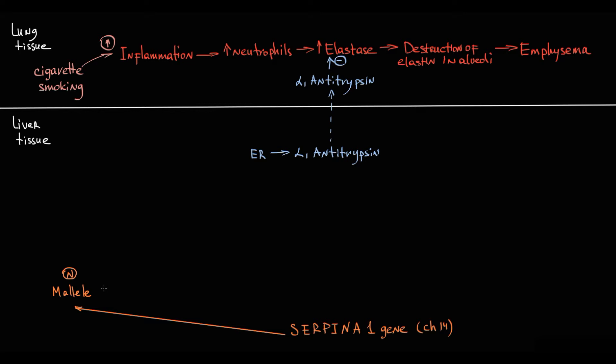Mutations can alter the nucleotide sequence of a particular gene and by this create other versions of the gene. These versions of a gene are called alleles, and different alleles result in different production levels of alpha-1-antitrypsin.